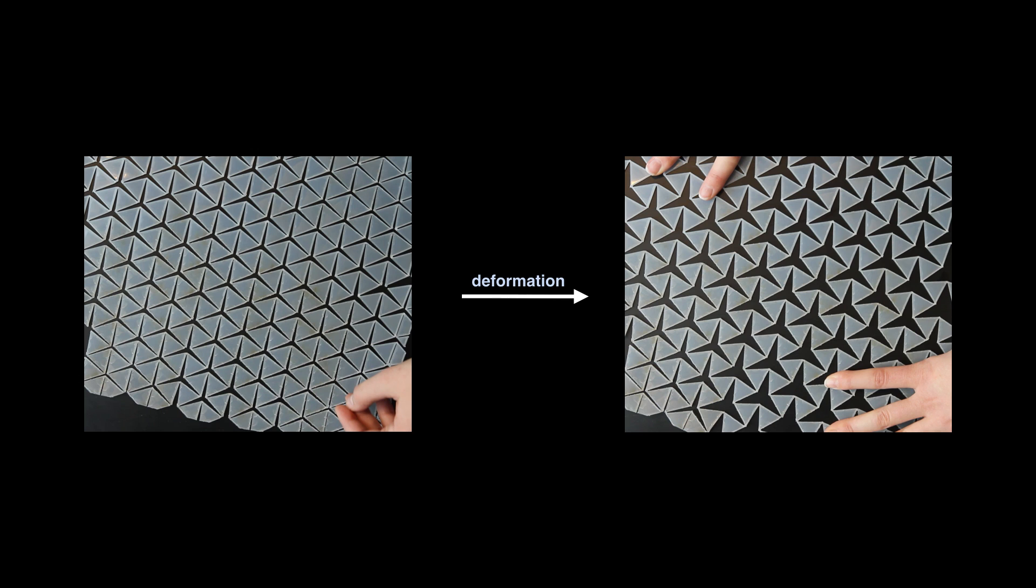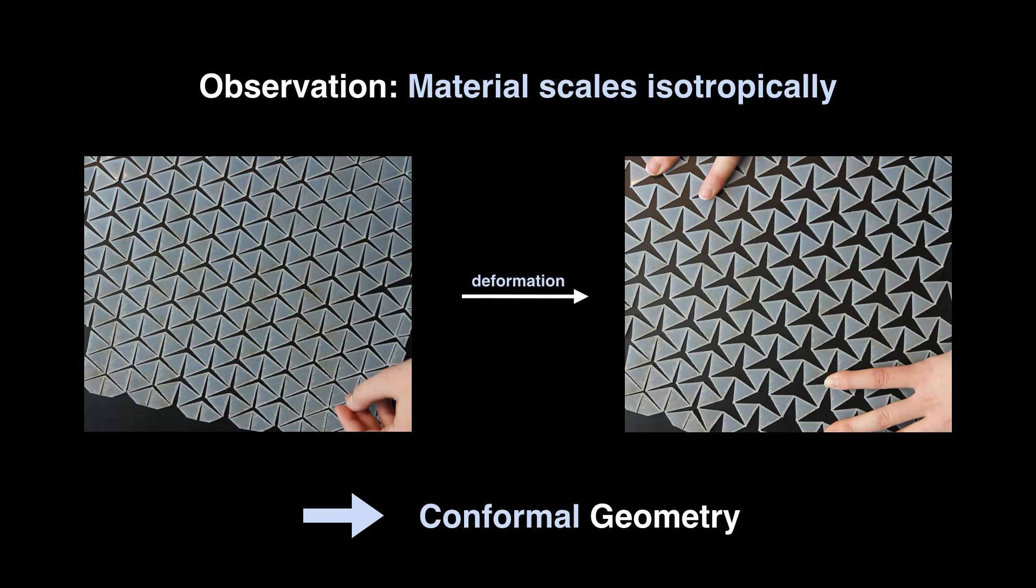And one thing we notice by looking into material deformation more closely is that the material scales approximately isotropically. This observation provides a direct link to conformal geometry. More specifically, we can exploit theory and algorithms of conformal maps to find a globally consistent initialization for our non-linear surface approximation algorithm.